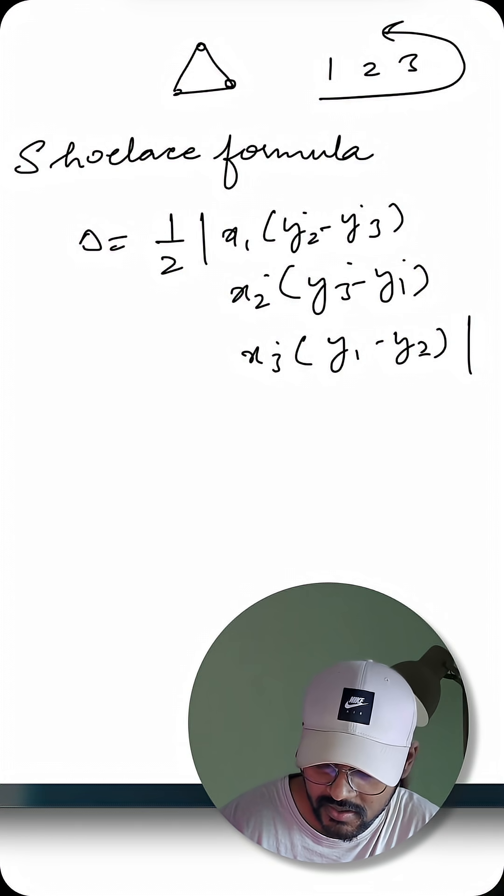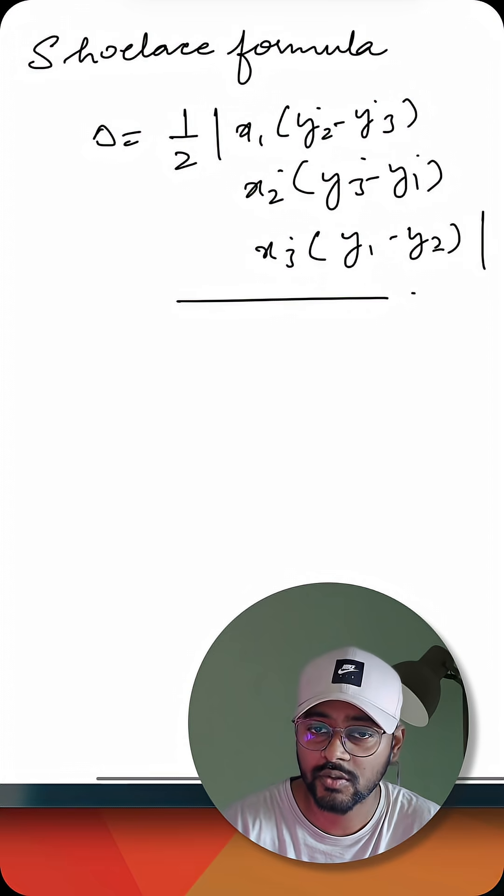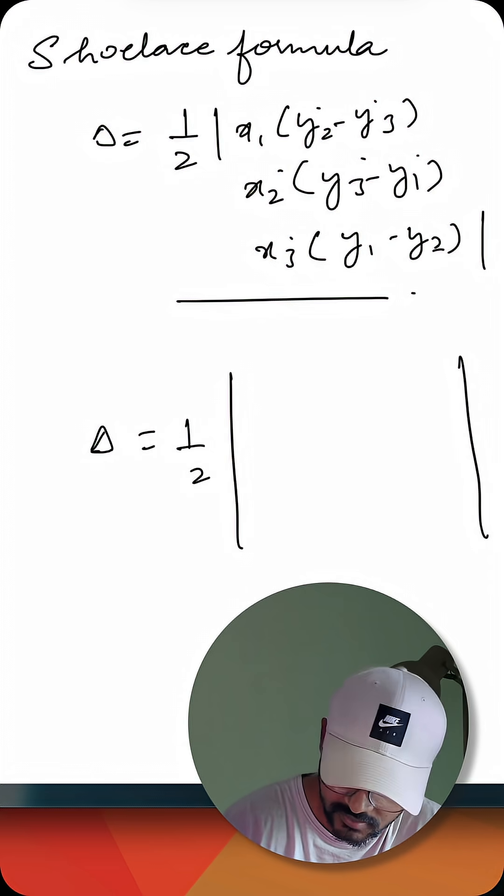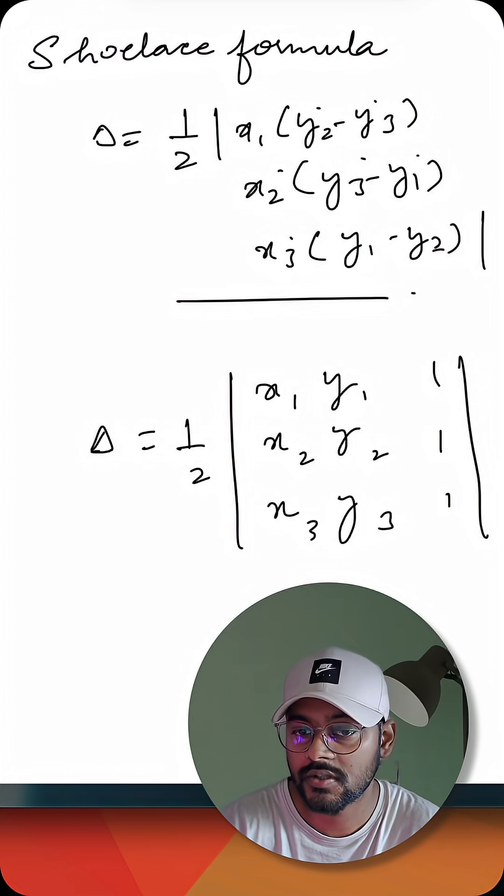Here if we have three points x1 y1, x2 y2, x3 y3, we can directly apply this formula and get the answer. For those who are curious about the source of this formula, triangle area is equal to half of the determinant of a square matrix which is x1 y1, x2 y2, x3 y3, and 1 1 1. If we just solve this determinant we'll get the same formula.